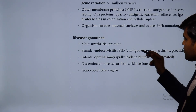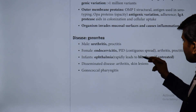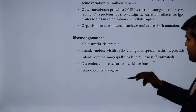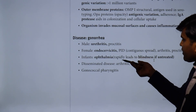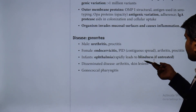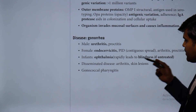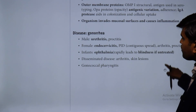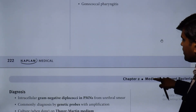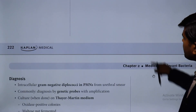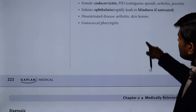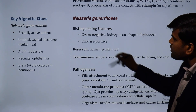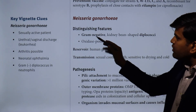N. gonorrhoeae causes disease at mucosal surfaces: in males — urethritis and proctitis; in females — endocervicitis and PID (pelvic inflammatory disease); arthritis; proctitis. In infants, it can cause ophthalmia neonatorum, which rapidly leads to blindness if untreated. Disseminated disease includes arthritis and skin lesions. Gonococcal pharyngitis can also occur.